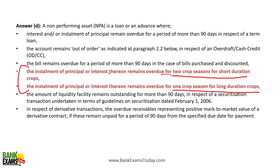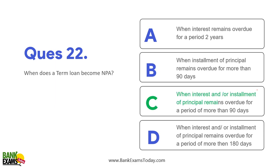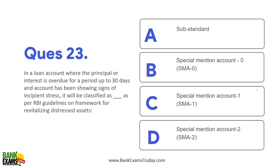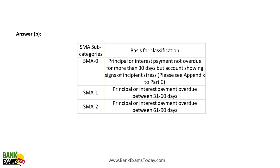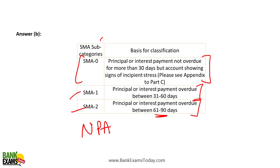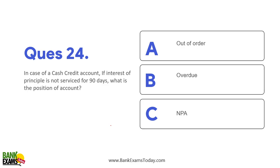When does a term loan become NPA? When interest or installment of principal remains overdue for more than 90 days. Even before three months, RBI wants banks to classify loans as SMA 0, SMA 1, and SMA 2. Overdue for 1–30 days is SMA 0; 31–60 days is SMA 1; 61–90 days is SMA 2. After 90 days, the NPA concept applies.